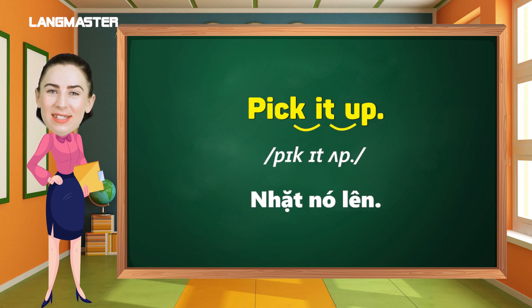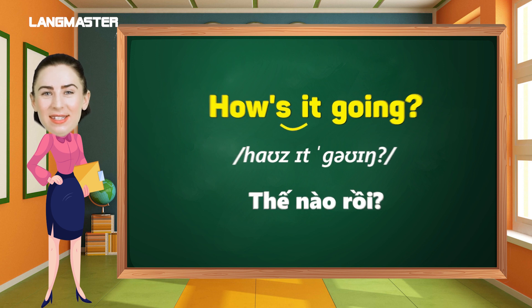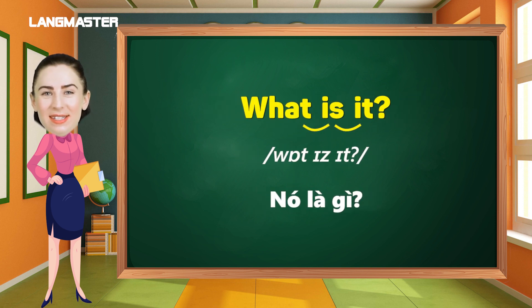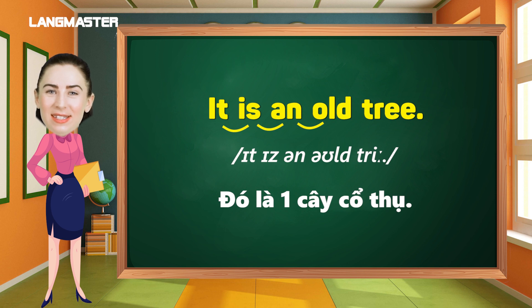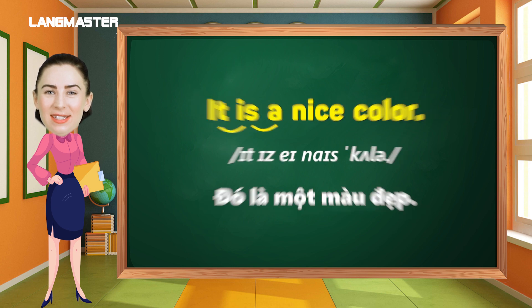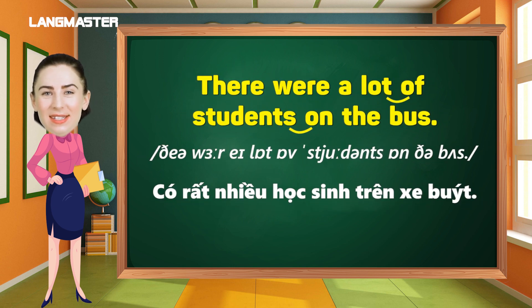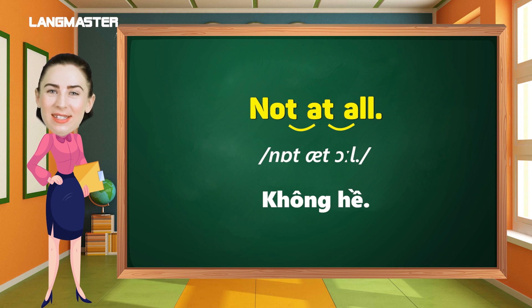Pick it up. How's it going? What is it? Spell it. It is an old tree. It is a nice color. There were a lot of students on the bus. All of it. Not at all.